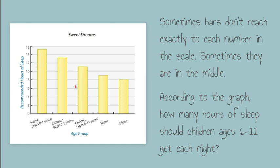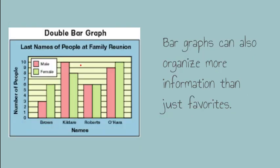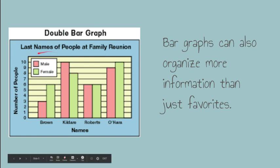So children ages 6 to 11 years, according to this graph, should be getting 11 hours of sleep each night. Bar graphs can also organize more information than just favorites. We've seen some for favorites, some for amount of sleep, and now we have listed names of people at the family reunion.